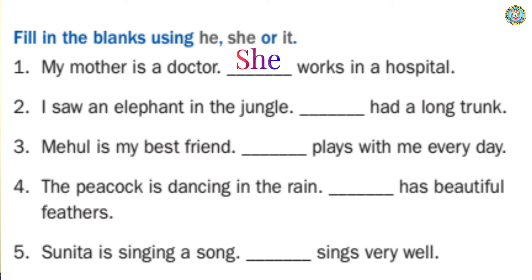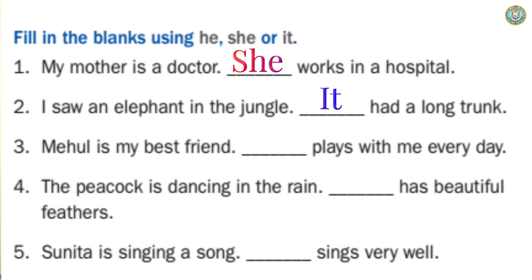Look at number two: 'I saw an elephant in the jungle.' Elephant is a name of an animal. For the name of an animal, we use the word 'it.' The answer is: 'It had a long trunk.' In the blank, you write I-T, it.